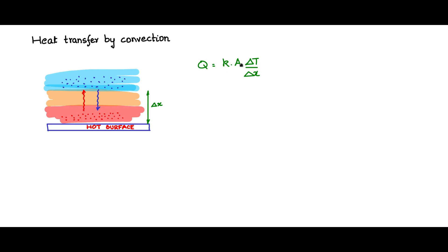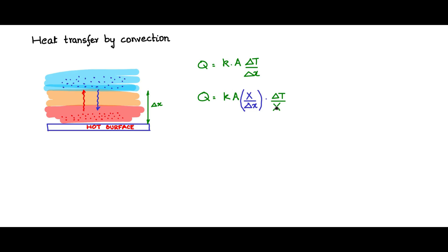Everything in the equation is known: the thermal conductivity, the area of cross section across which heat is flowing orthogonally, delta T — the temperature difference between the hot surface and the external ambient — and delta x, the thickness of the fluid. However, delta x is an uncertain quantity. What is commonly done is that a lot of experimentation has been done for different geometries. A modification is to multiply and divide by a variable X, called the characteristic dimension.